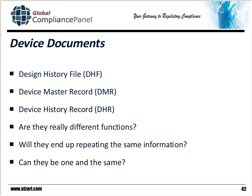The device documents listed in the quality system regulation are kind of interesting. The design history file points to the past — how was that design arrived at? The device master record is a record of when you had the design transfer, so it shows the record of those documents having been transferred in the form of a device master record, which shows how to build the part. And then once you build the part, you have a record of how it was built — evidence that it was built. So think about it: this is how I designed it, this is how I built it. Are they really different functions? We're talking about the same family, the same set of documents just presented at different points in time. Will they end up repeating the same information? Yes, they will. Can they be one and the same? The answer is yes, they can, if they are organized in the proper manner.